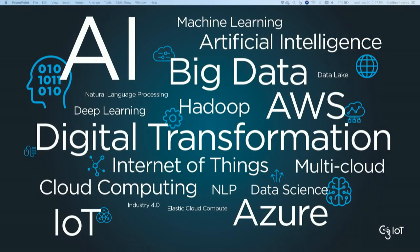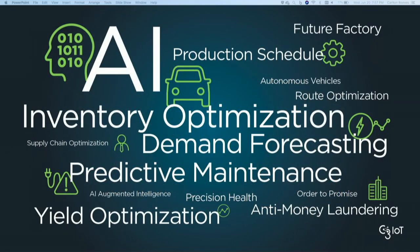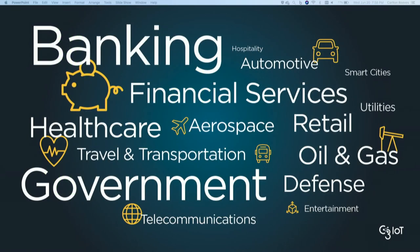Some of the technologies driving this are big data, Internet of Things, multi-cloud and cloud computing, natural language processing, and artificial intelligence. Some of the major use cases include inventory optimization, demand forecasting, and predictive maintenance — which I'll talk about with the US Air Force deployment — as well as yield optimization and route optimization. The industries leveraging this are literally everything: financial services, retail, oil and gas, government, aerospace and defense, and transportation.